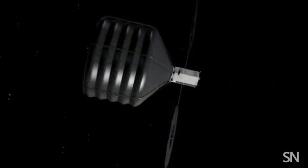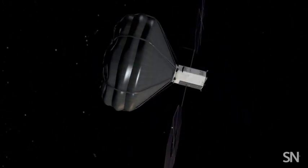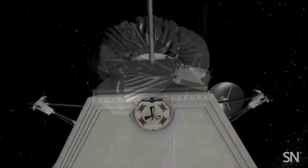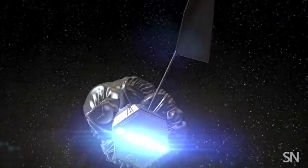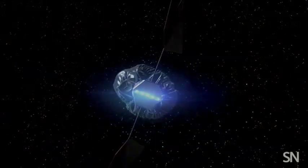The bag will then be slipped around the rock and cinched shut like a garbage sack. The spacecraft will fire up its engines and slowly, gently begin nudging the rock toward its new orbit around the moon, a journey that could take years.